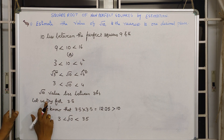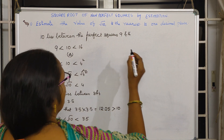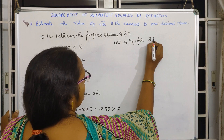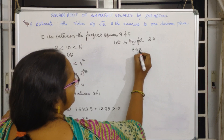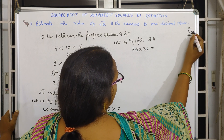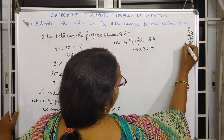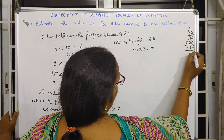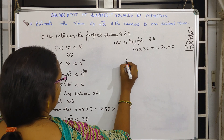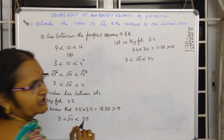Since 3.5 is not equal, let us decrease the number and try 3.4. That is 3.4 times 3.4. Multiplying 34 times 34: 4 fours are 16, 4 threes are 12 plus 1 is 13, 3 fours are 12, 3 threes are 9 plus 1 is 10 — giving 11.56. This is also much greater than 10, so: 3 is less than root 10 is less than 3.4.